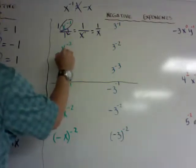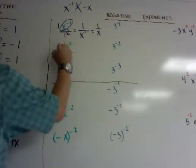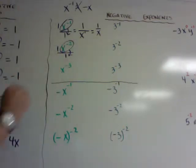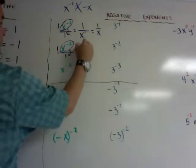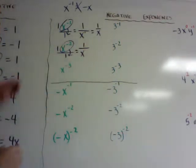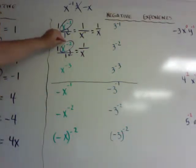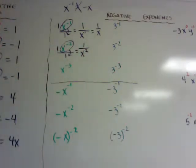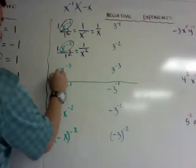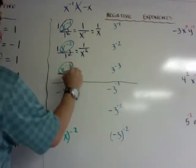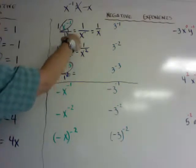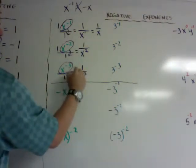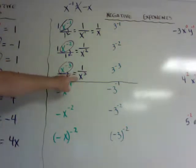Same thing with x to the negative 2. You circle the base with the negative exponent and move it down, leaving 1 on the top. x to the negative 2 on top becomes x to the positive 2 on the bottom. And for x to the negative 3, it becomes 1 over x to the positive 3. So negative 3 on the top becomes positive 3 on the bottom.